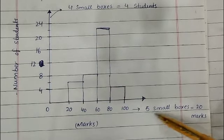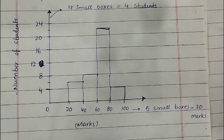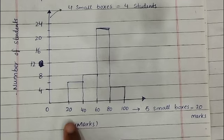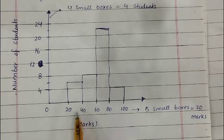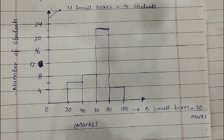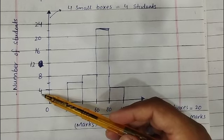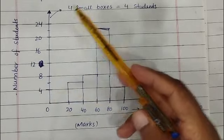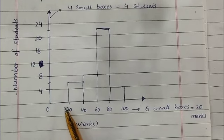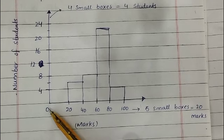On the x-axis, I am taking five small boxes for 20 marks. The frequency table ranges are 20 to 40, 40 to 60, 60 to 80, and 80 to 100, so each interval has a gap of 20 marks. I take five small boxes as 20 marks. On the y-axis I count four small boxes and mark 4, 8, 12, 16, 20, 24. On the x-axis I count five small boxes and mark 20, 40, and so on. From 0 to 20 there is no value, so no bar is placed there.